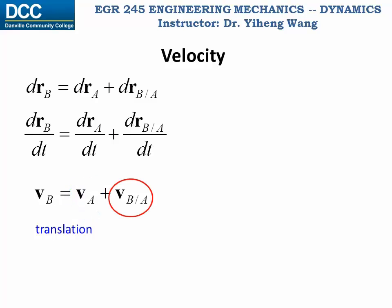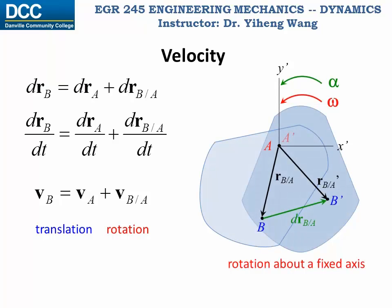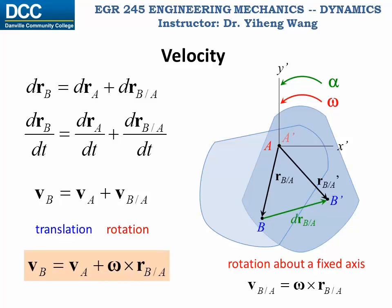From what we've learned before, for rotation about a fixed axis, the linear velocity of any point equals the cross product of omega and its position vector with respect to the center of rotation. Therefore, for a rigid body undergoing general plane motion, the absolute linear velocity of particle B can be determined as the absolute linear velocity of particle A plus the cross product of omega, the angular velocity vector of this rigid body, and rB/A, the relative position vector of particle B with respect to A.